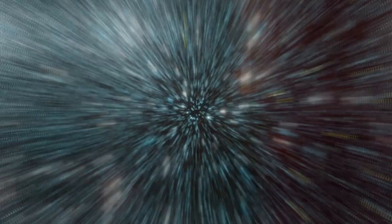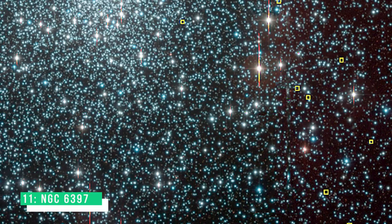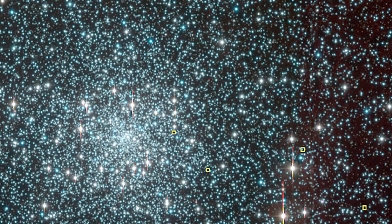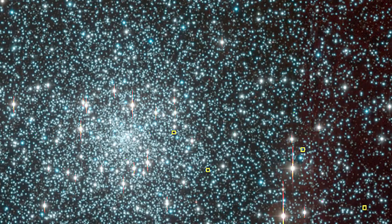NGC 6397. Located in the constellation Ara is the globular cluster designated as NGC 6397, which is also known as Caldwell 86. Its distance from our planet is around 7,800 light-years away, which places it as one of the two globular clusters that are closest to our home, the other one being Messier 4.